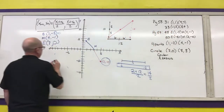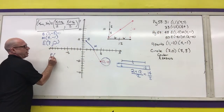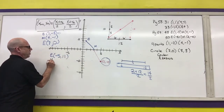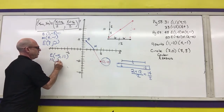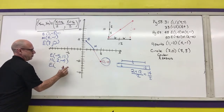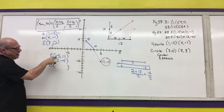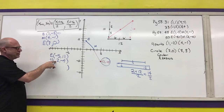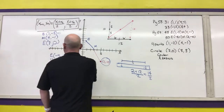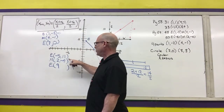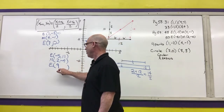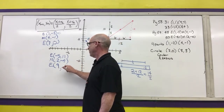The next example: they give you an endpoint at (-5, 11) and tell you the midpoint is at (2, -4). To go from -5 to 2, you add 7, so I'm going to add 7 more, giving me 9. And to go from 11 to -4, I subtracted 15, so to get to my endpoint I subtract 15 more, which gives me -19. So the other endpoint is at (9, -19).